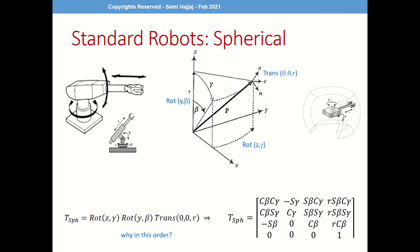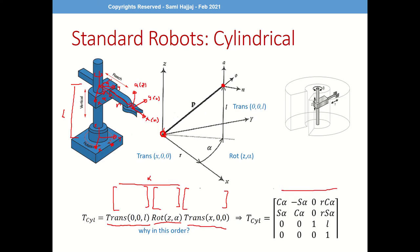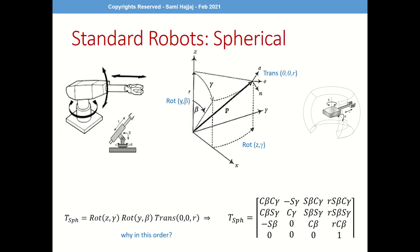The parameters for the cylindrical robot are: L (the height or link length), alpha (the twist angle for rotation about Z), and R (the reach — the translation along X). I'll also note that this is an R, not an X. We'll come back to the cylindrical robot in a while. Now let's move on to the spherical robot.